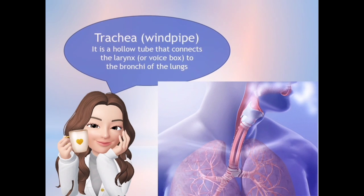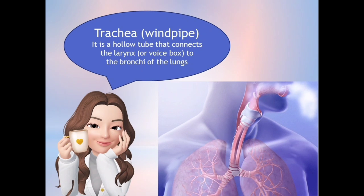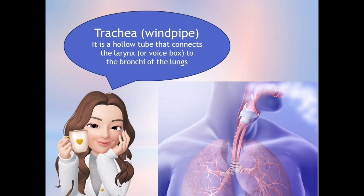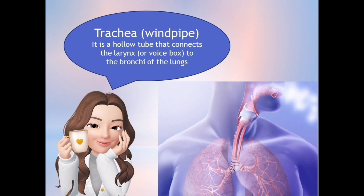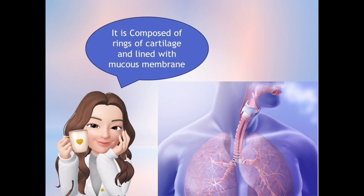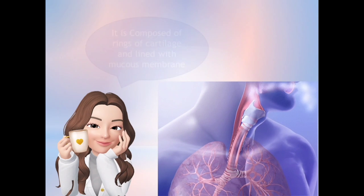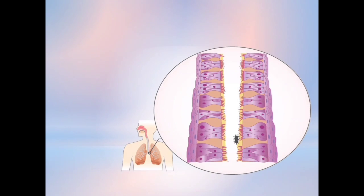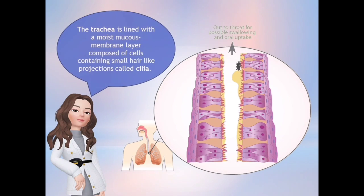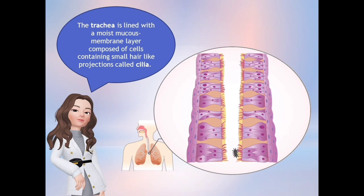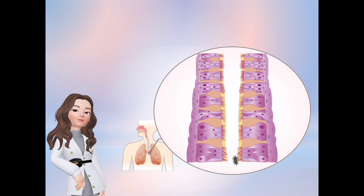Next to the larynx is the trachea, which is also called the windpipe. It is a hollow tube that connects the larynx to the bronchi of the lungs. It is composed of rings of cartilage and lined with a mucous membrane. The trachea is composed of moist mucous membrane, which contains a small hair-like structure called cilia.